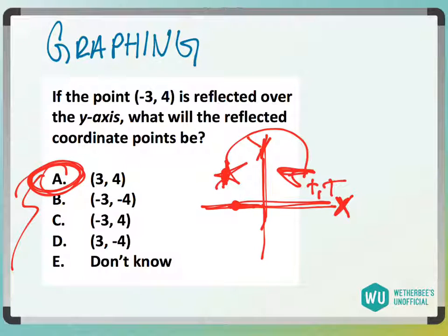When it says reflected over the y, you actually draw it out. This is why if it's going to reflect across it, it's going to go right here, and this is where x is positive and y is positive.